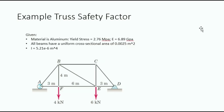Let's look at an example of a truss loaded with 4 kN at F and 6 kN at E. Given that the material is made out of aluminum with a yield stress of 2.76 megapascals and a Young's modulus of 6.89 gigapascals, we have that all beams have a uniform cross-section of 0.25 times 10 to the negative third meter squared, and the area moment of inertia is 5.21 times 10 to the negative sixth meters to the fourth. With this information, we can determine the safety factor of this truss under these loads.